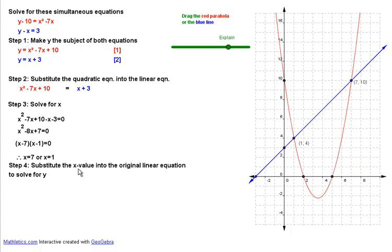And then we substitute the x values that we've found into the original linear equation. You can see that when x equals 7, that's going to be that point there, and when x equals 1, you're going to get that point there.